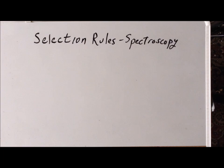In this video, we are going to summarize the selection rules for electronic spectroscopy. At first, the case of one electron, followed by the case for many electrons.